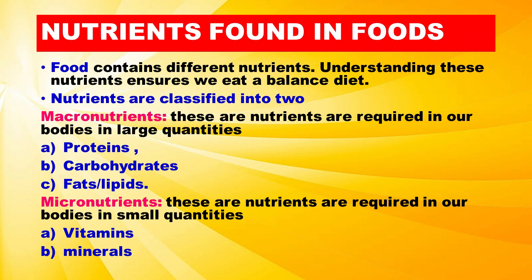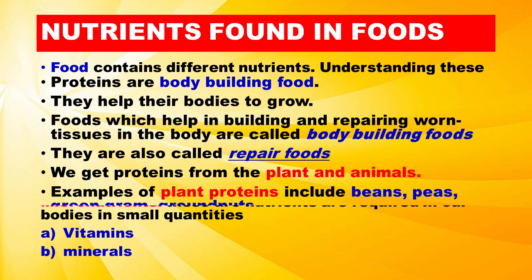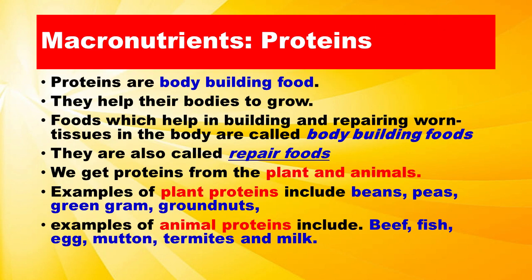Food contains different nutrients. Understanding these nutrients ensures we eat a balanced diet. Nutrients are classified into two types. Macronutrients are nutrients required by our bodies in large quantities, and include proteins, carbohydrates, and fats or lipids. Micronutrients are nutrients required by our bodies in small quantities, and include vitamins and minerals.